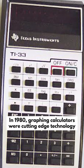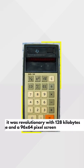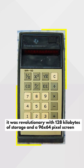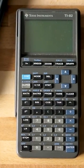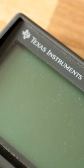In 1980, graphing calculators were cutting-edge technology. It was revolutionary with 128 kilobytes of storage and a 96 by 64 pixel screen. Something of that caliber that could also fit into your pocket deserved that $100 price tag retailers slapped on it.